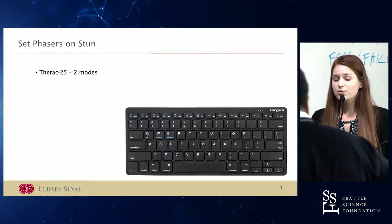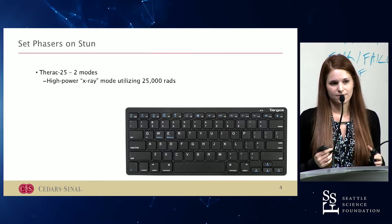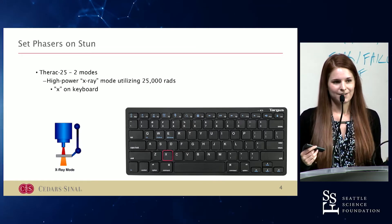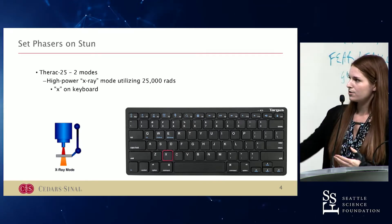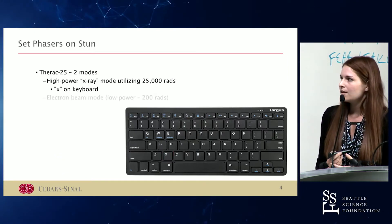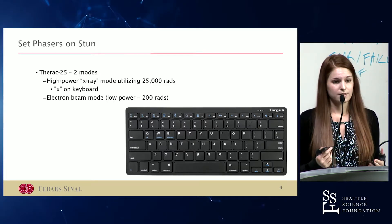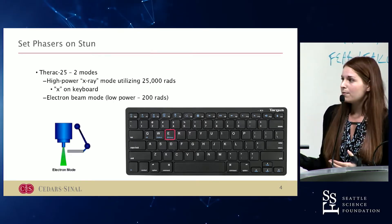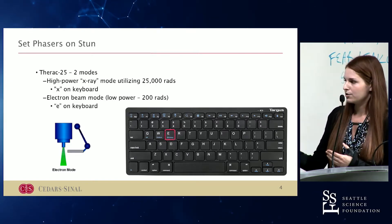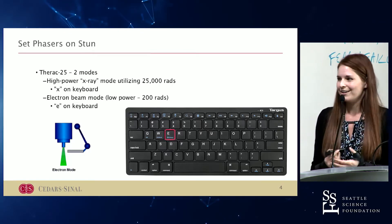The Therac-25 has two modes. One is a high-power x-ray mode which utilizes 25,000 rads of radiation. You press X on a keyboard to activate it, and it sends those 25,000 rads through a metal plate — like an x-ray. The other mode is called an electron beam power mode. It's low power, only 200 rads. There's no metal plate involved. You press E on the keyboard. E for electron beam, X for x-ray. Not too complicated.